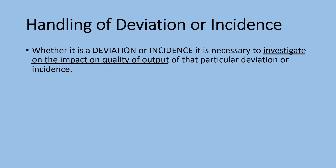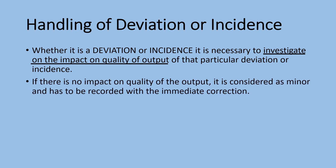Or MHRA guidelines. The MHRA guidelines provide a detailed slide share with various phases of investigation, very easy to understand and follow. If there is no impact on the quality of the output, it is considered as minor and has to be recorded with immediate correction. As discussed, the intent of incidence is considered as an accident that does not impact significantly the quality of output. So anything other than the incidence is considered as deviation. If it is a minor deviation, it should be recorded and corrected immediately.